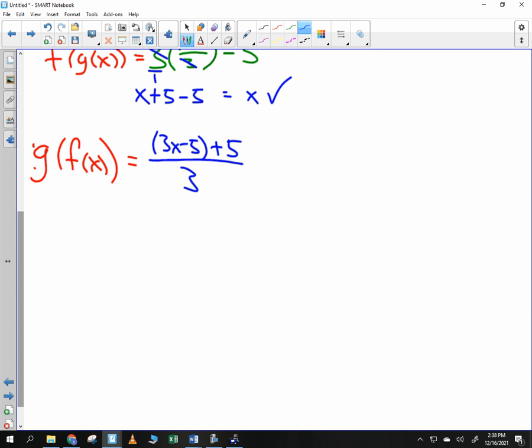What's going to be the first thing to cancel here? Yeah, the 5 and the negative 5. So we get 3x/3. And 3x/3 is? So I got x for both of them. So yes, they are inverses.